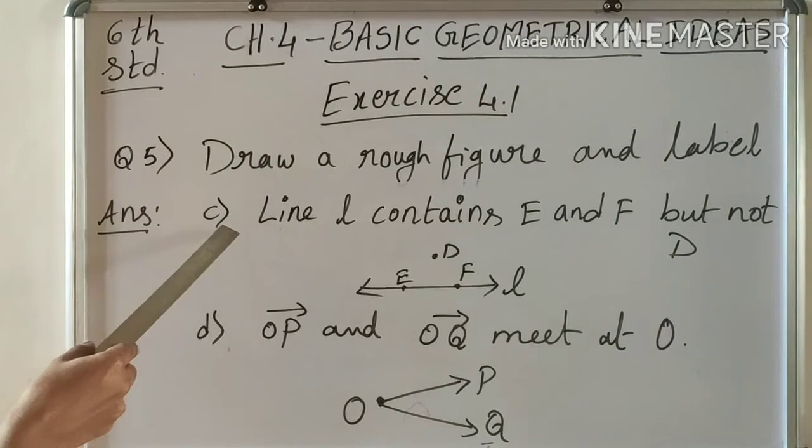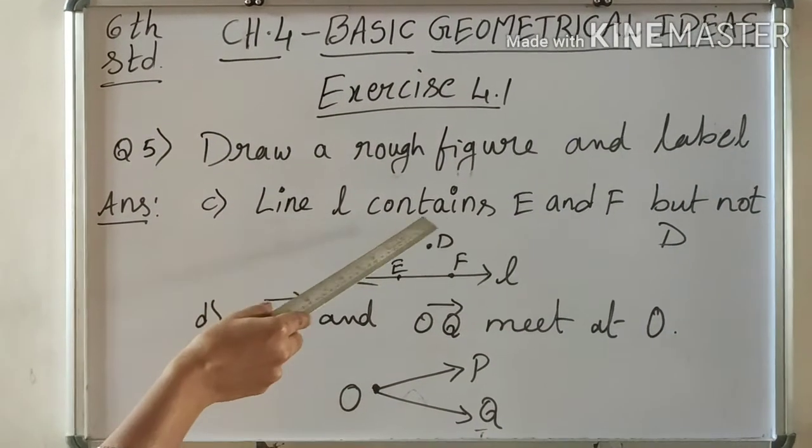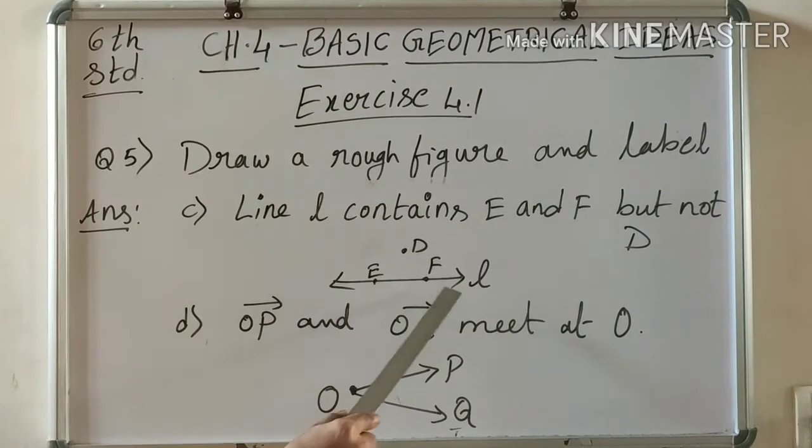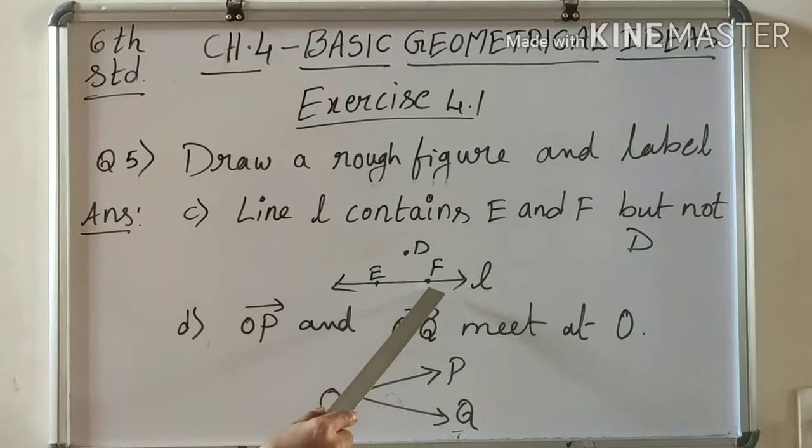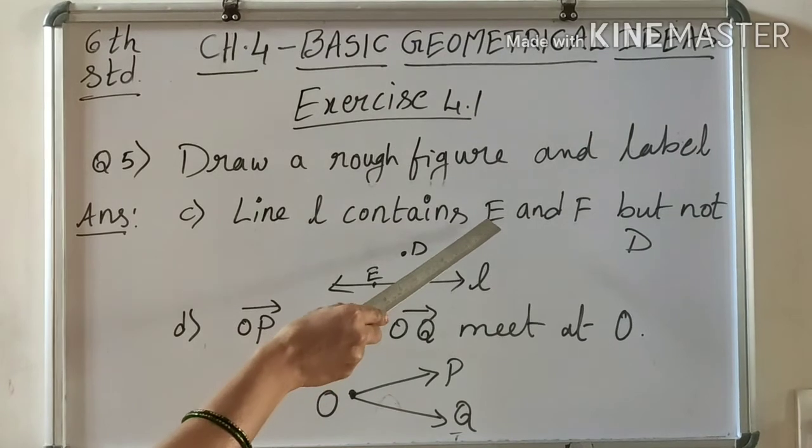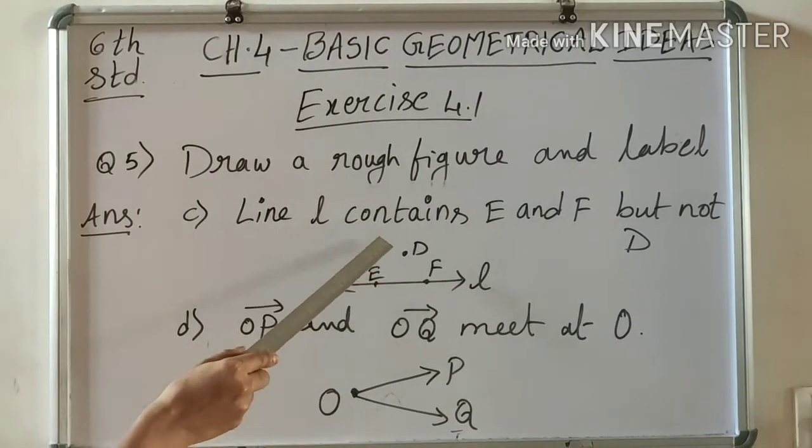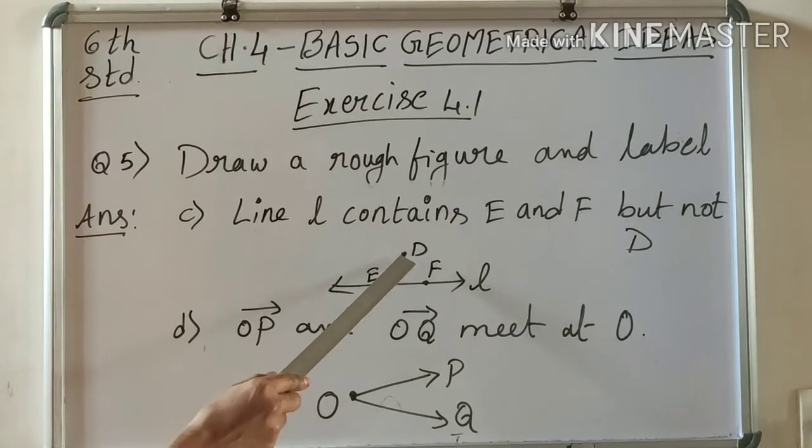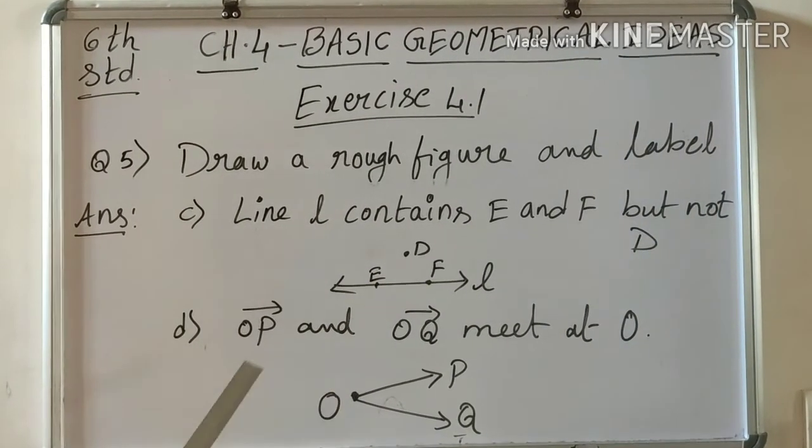Next C: Line L contains E and F but not D. Here is a line, that is L. On it there should be two points, that is, they are E and F. And not D. D should not be on it. This is out of the line. Draw it this way.